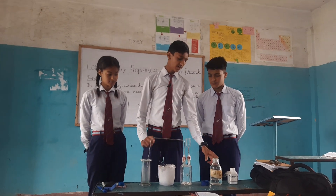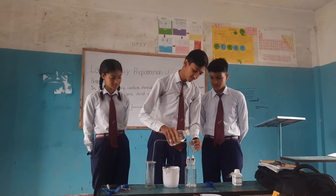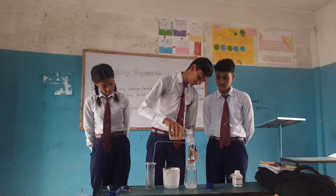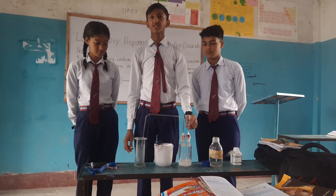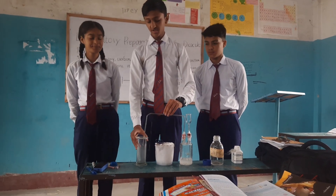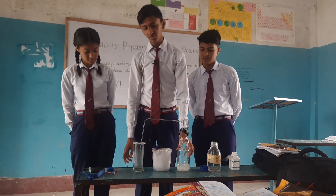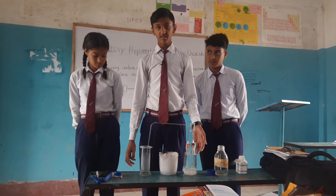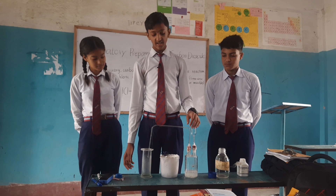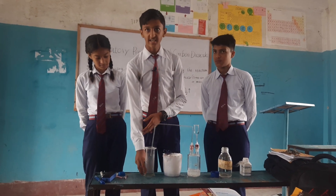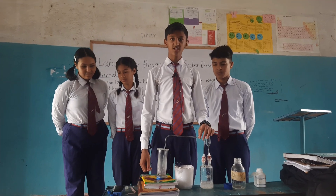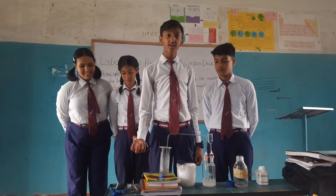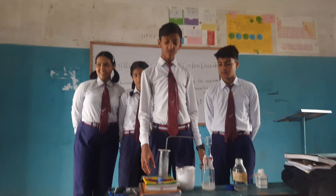We pour dilute hydrochloric acid through the thistle funnel into the Wolf's bottle and keep the delivery tube sealed tight. The reaction between limestone and dilute hydrochloric acid occurs, producing carbon dioxide gas. This gas is passed through the delivery tube and collected in the gas jar by the upward displacement of air, because carbon dioxide is heavier than air.